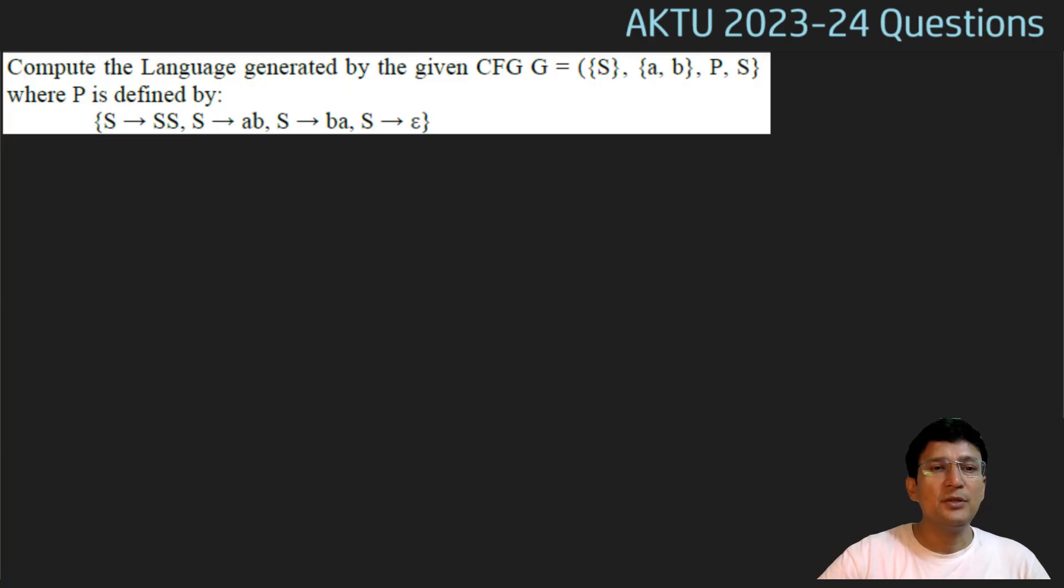Now we have production of kind S produces SS. This means it will generate two symbols, one S and one S. Then it is asking that it will generate S produces AB, or it will produce S produces BA. If it generates AB, then A and B counts are the same. Similarly, if it generates BA, then B and A counts are the same. This means this grammar will generate strings where the number of A's equals the number of B's.